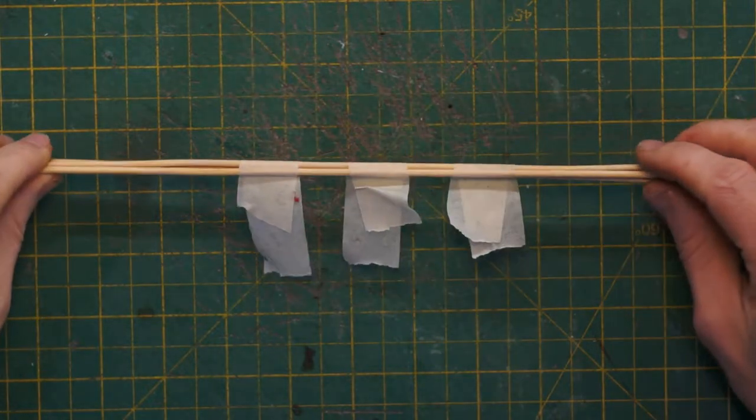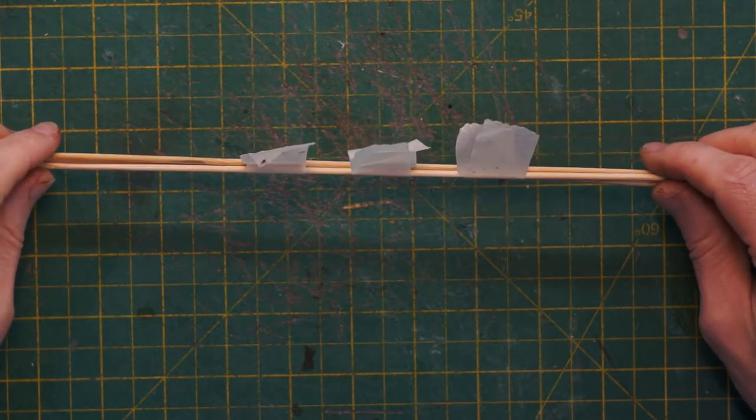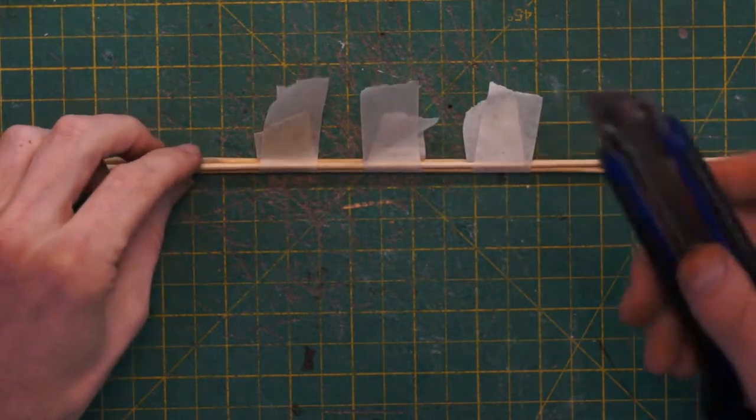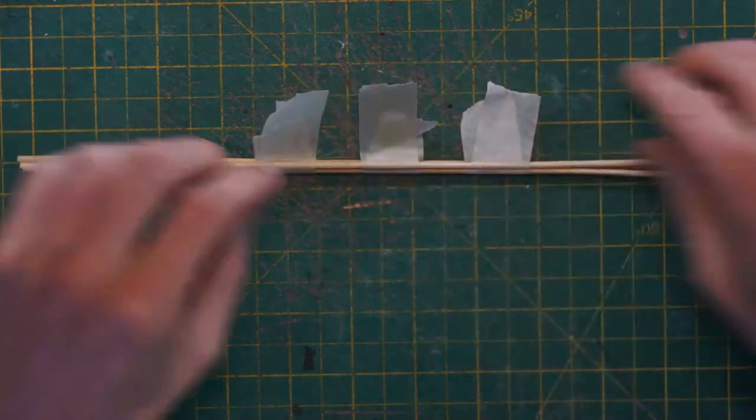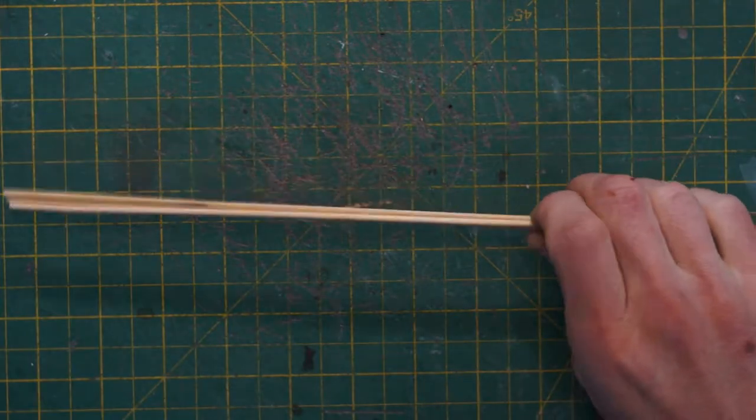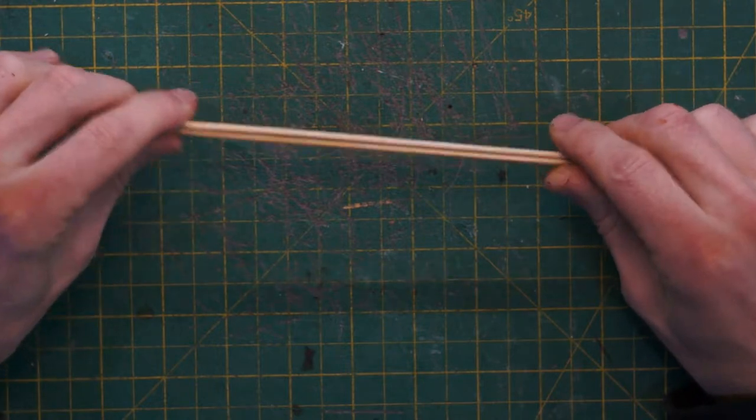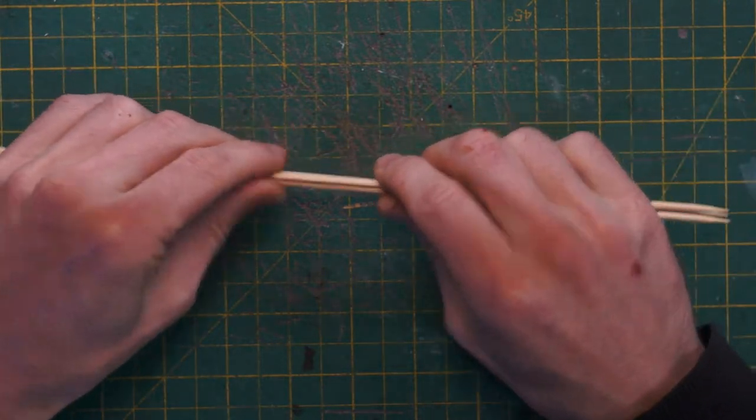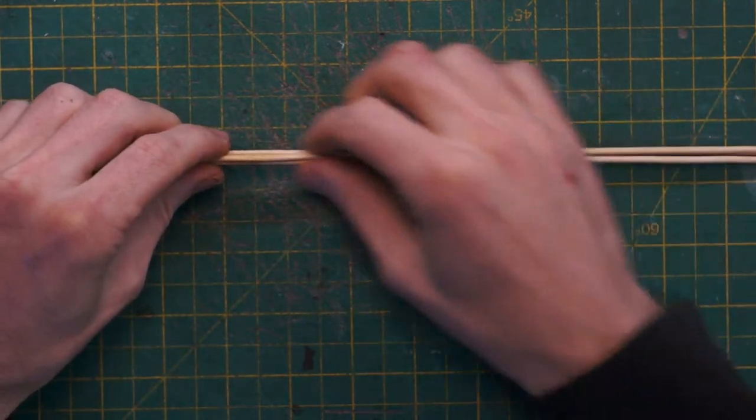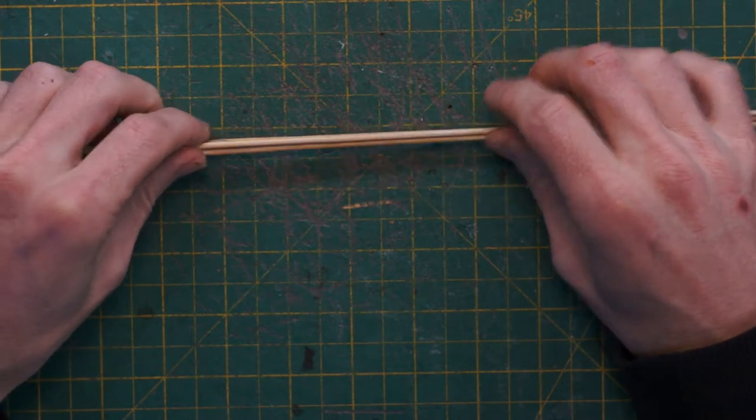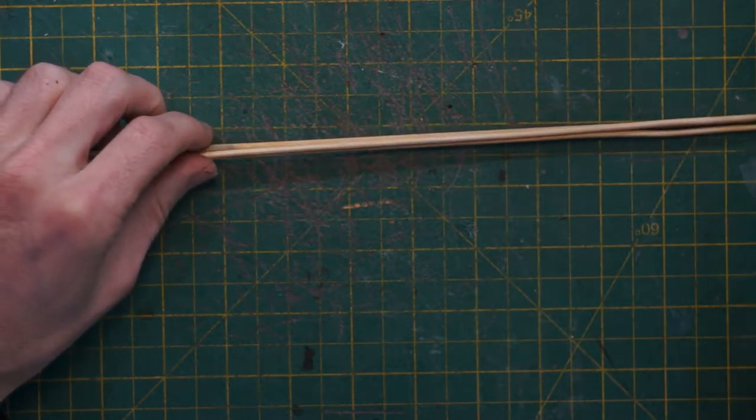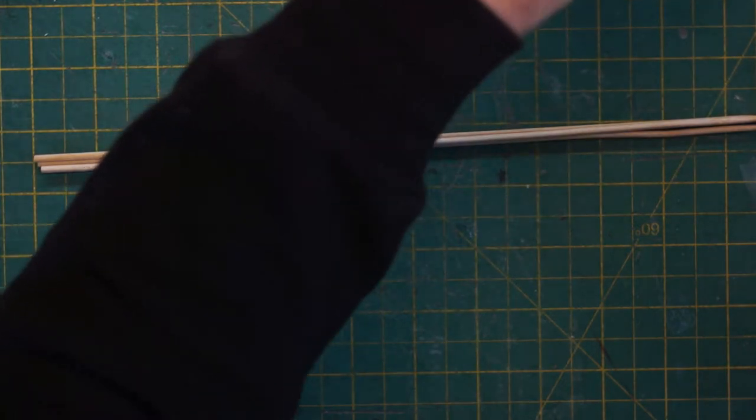So while that's drying we'll jump back to our columns. If you remember those skewers we glued together earlier. They should be dry now. So let's cut them open and have a look. Yeah, I think that's pretty good. They're all stuck together. Just needs a bit of light sanding before we measure up and see if we can fit them in place.